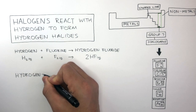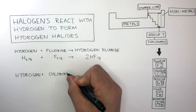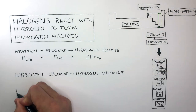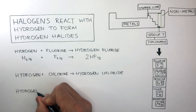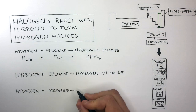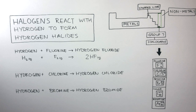Hydrogen reacts with chlorine forming hydrogen chloride, and hydrogen reacts with bromine forming hydrogen bromide. Pause now and complete the balanced symbol equations for when hydrogen reacts with chlorine and when hydrogen reacts with bromine — the answers will follow.